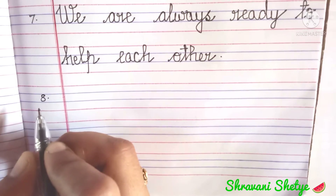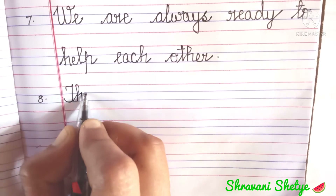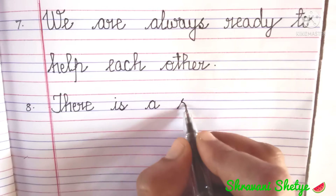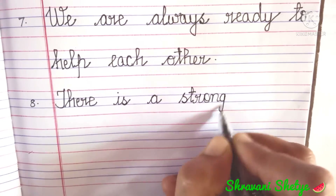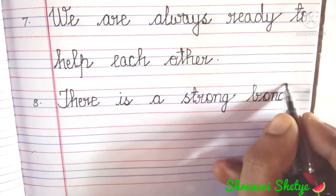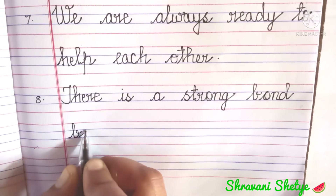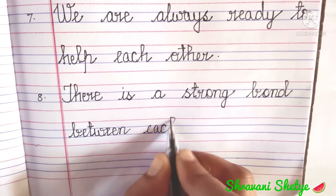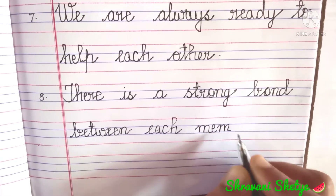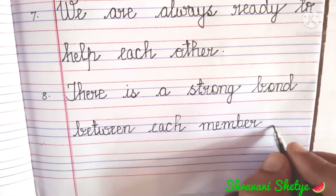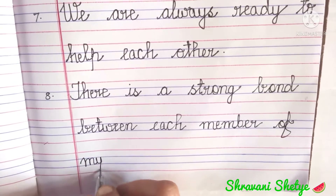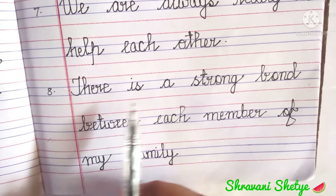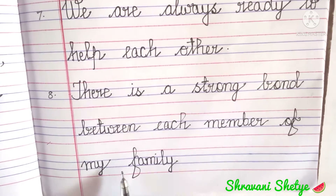Point number 8. We will write T-H-E-R-E, there, I-S, is, A, a, S-T-R-O-N-G, strong, B-O-N-D, bond, B-E-T-W-E-E-N, between, E-A-C-H, each, M-E-M-B-E-R, member, O-F, of, M-Y, my, F-A-M-I-L-Y, family. There is a strong bond between each member of my family.